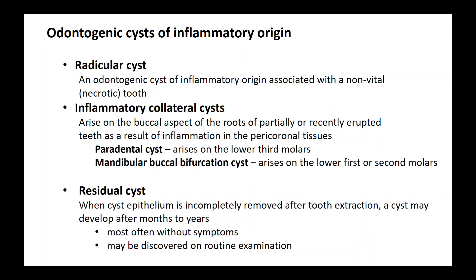The odontogenic cysts of inflammatory origin include radicular cysts and inflammatory collateral cysts. Radicular cysts are by far the most common and are related to the apex of a necrotic tooth. The inflammatory collateral cyst is related to partially or recently erupted teeth and there are two types: the paradental cyst and the mandibular buccal bifurcation cyst. The residual cyst is often discovered on routine examination sometime after tooth extraction, when not all epithelium was eliminated.